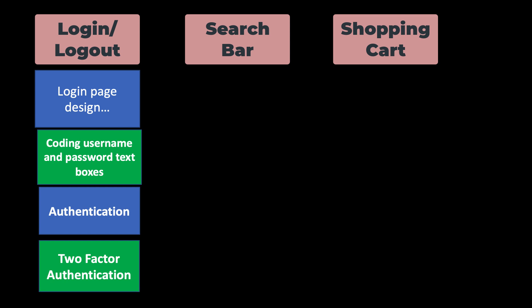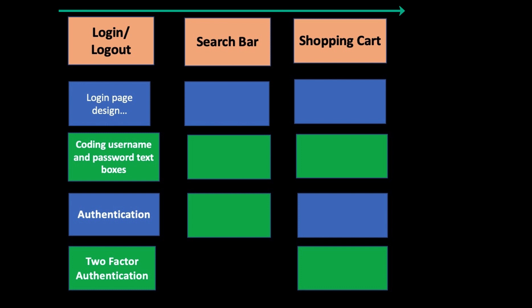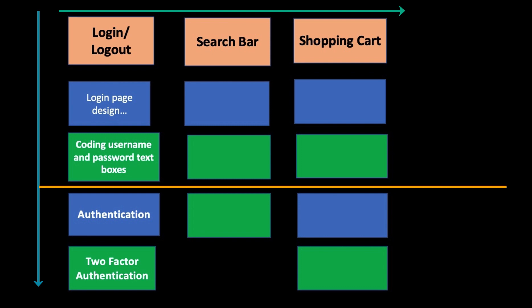Similarly, we can fill other parts of the matrix. Now we know that this is the order of the product roadmap, and the vertical order is the priority of corresponding activities under each feature. Once we are done with all this arrangement, we can divide our user story map horizontally into a timeline of when the team can accomplish this work.